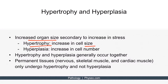Two, by increasing the number of cells, and this is called hyperplasia. Or three, the cell can undergo both hypertrophy and hyperplasia. Generally, hypertrophy and hyperplasia occur together. For example, in iodine deficiency, thyroid enlargement occurs in order to increase thyroid hormone synthesis. The thyroid enlargement occurs via hypertrophy and hyperplasia.